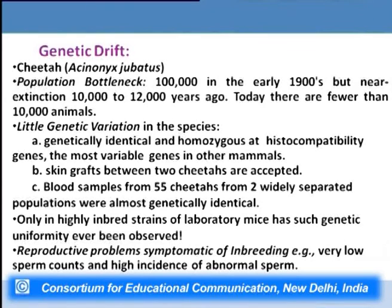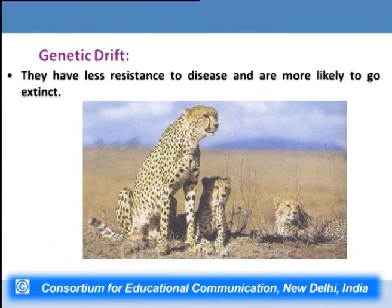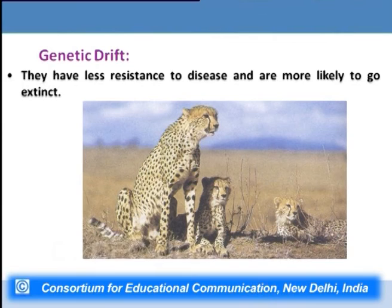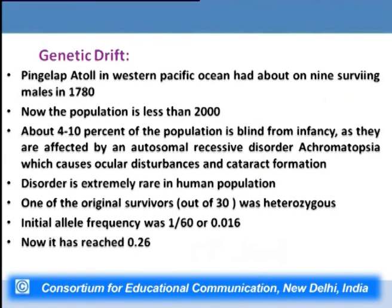The cheetah population also shows reproductive problems: very low sperm count and high incidence of abnormal sperm. They have a high incidence of inbreeding, susceptibility to a large number of diseases, and a very high chance of going extinct. In a sense, genetic drift does not lead to evolution but can cause extinction of a given population or an entire species.